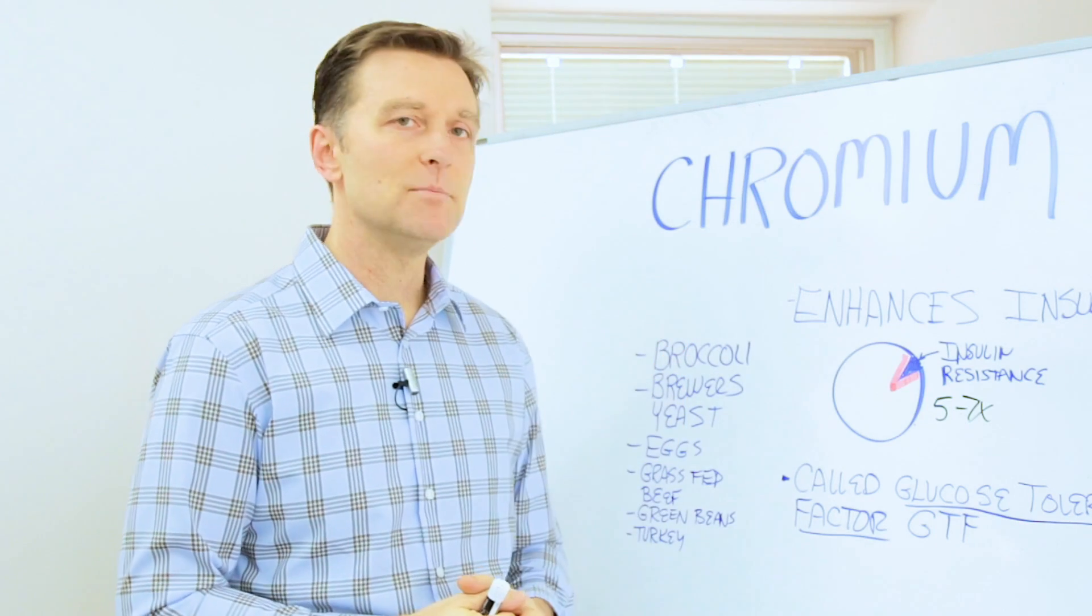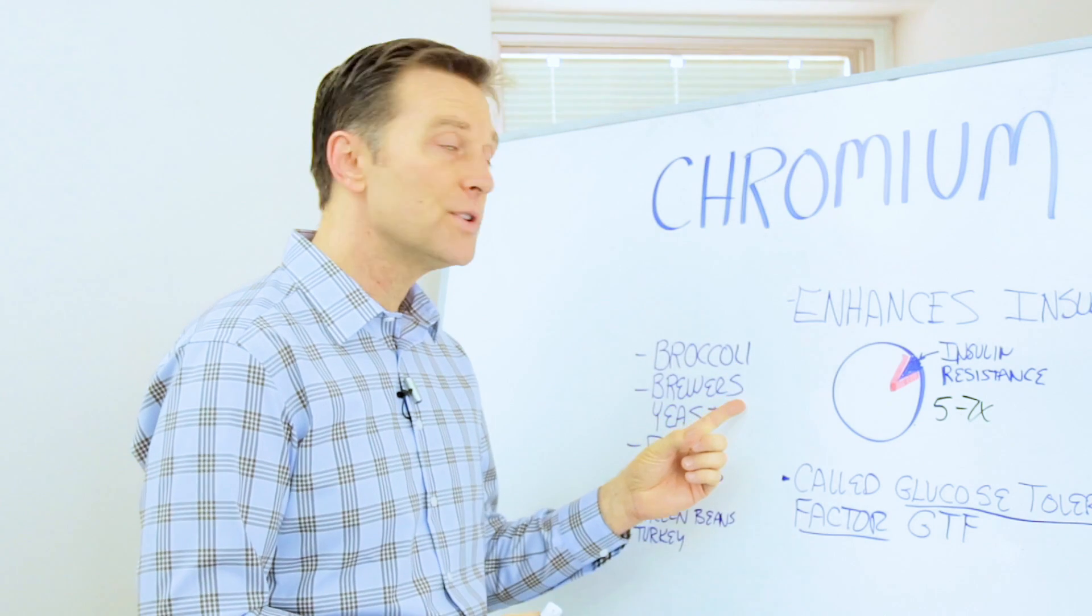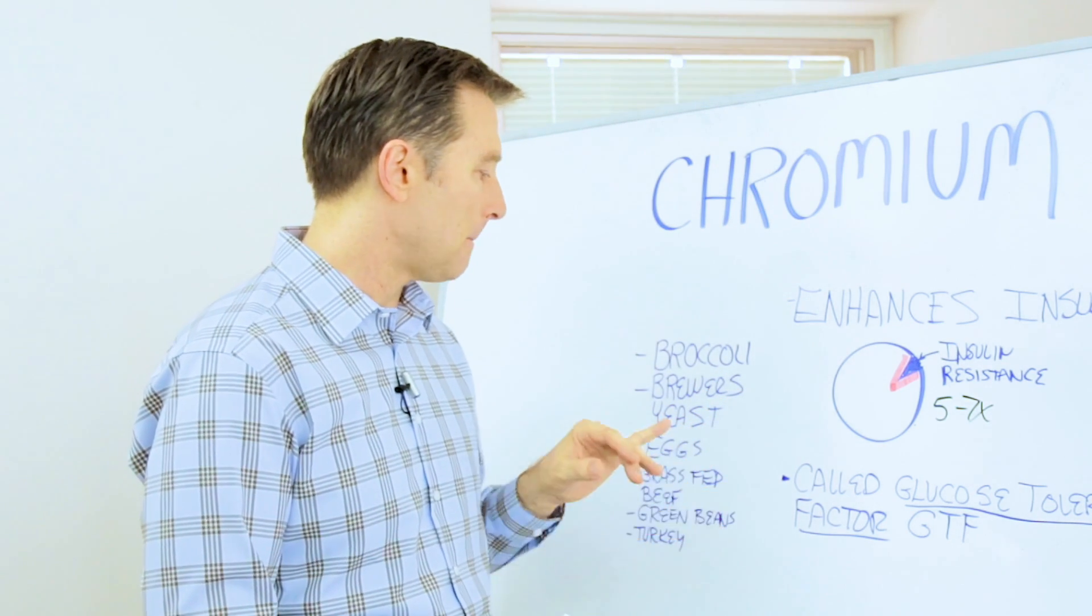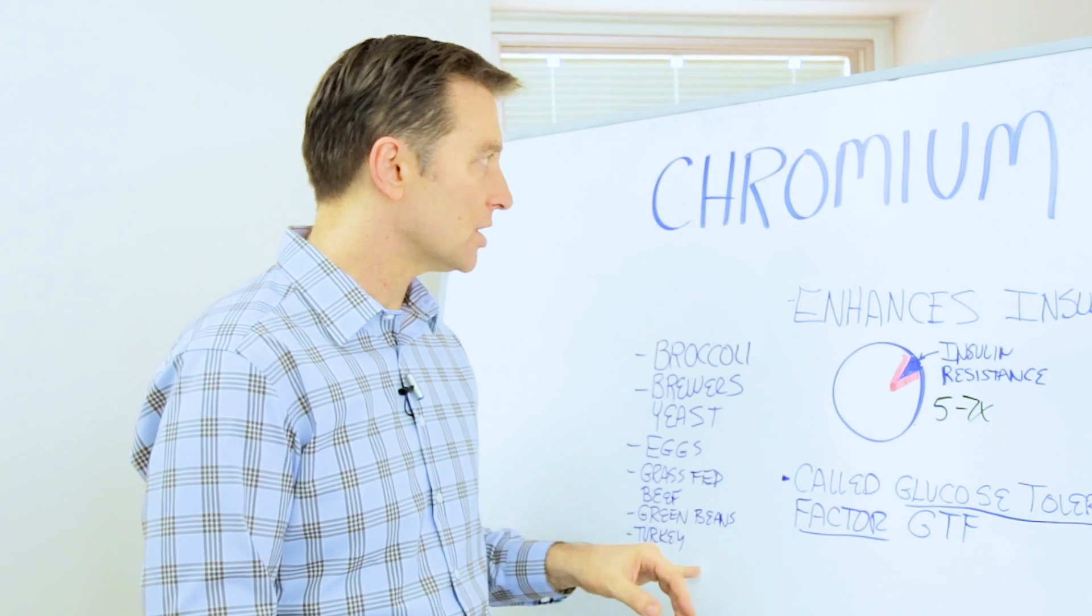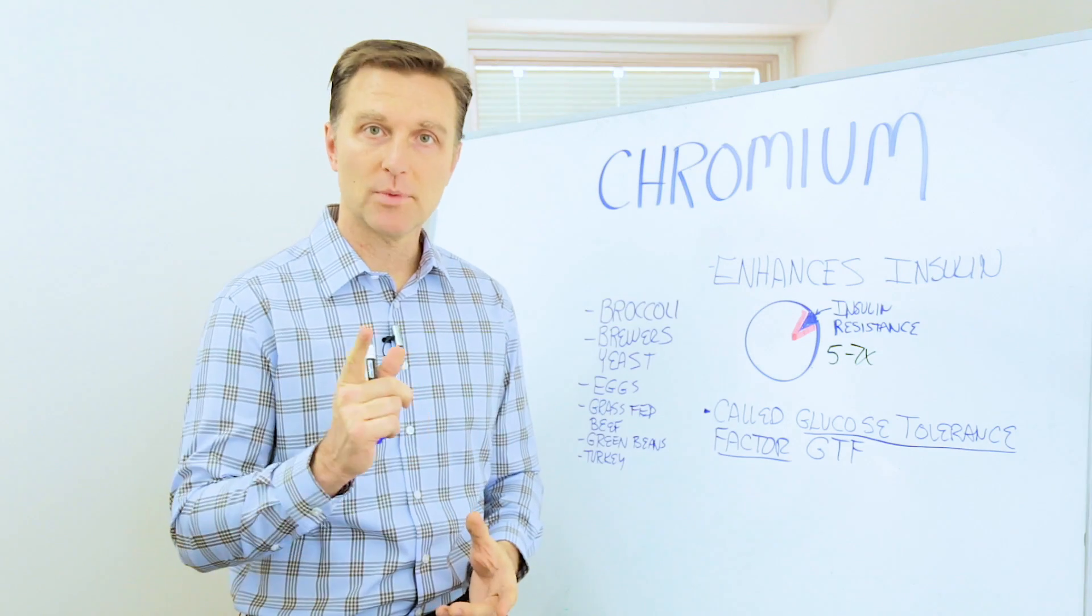Broccoli has the most chromium of any vegetable, so you should start consuming your broccoli. Brewer's yeast is another good one. Eggs, grass-fed beef, green beans, turkey is very high in chromium. There's a lot of other foods that have chromium as well, or you can get it as a supplement.